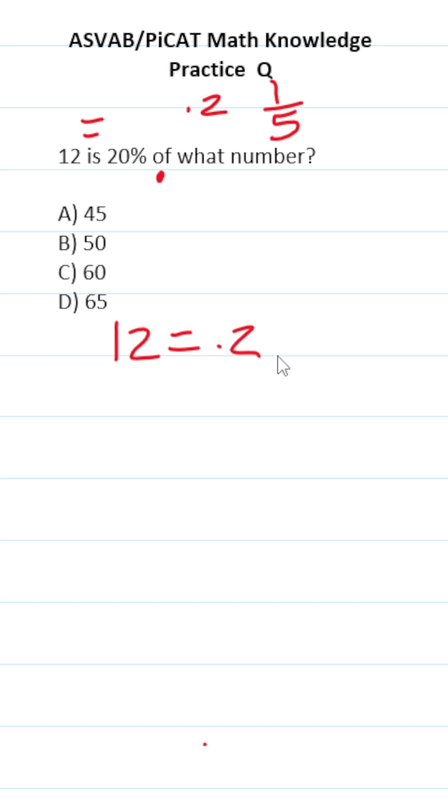Of in math is usually multiplication, so 0.2 times what number. The number's unknown, so we'll call that x. So we want to solve this one for x.